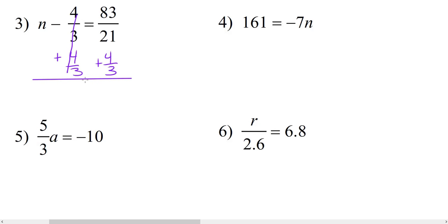On the left, the fractions cancel out, leaving us with n. And on the right, in order to add or subtract fractions, we need common denominators. So the least common denominator here is going to be 21. This is already 83 over 21, and 4 thirds is going to become 28 over 21. They're both positive, so we add them together, and that gives us 111 over 21.